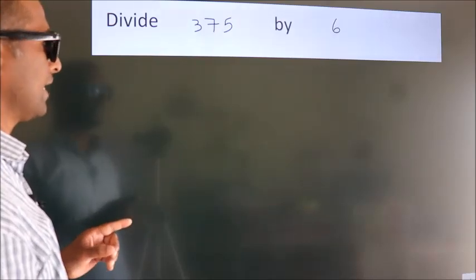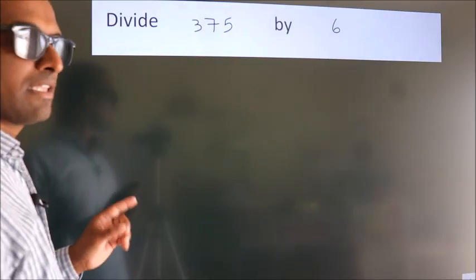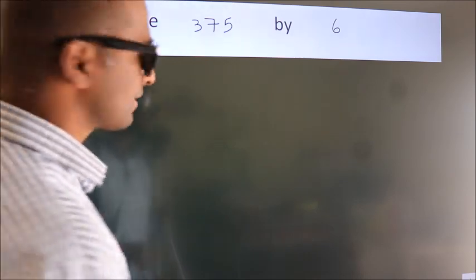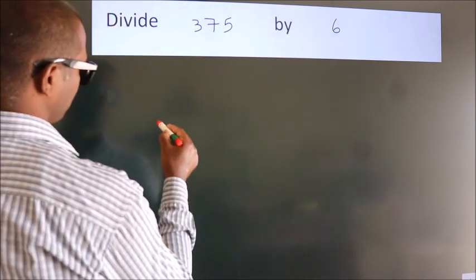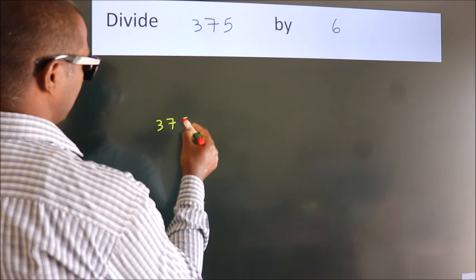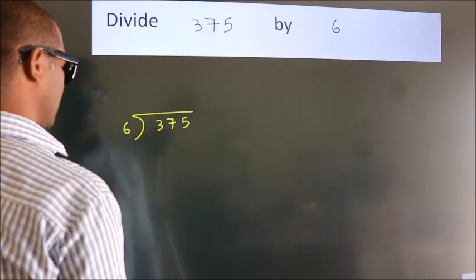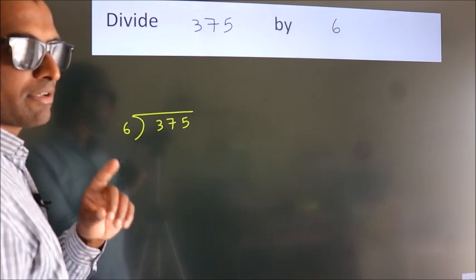Divide 375 by 6. To do this division, we should frame it in this way: 375 here, 6 here. This is your step one.